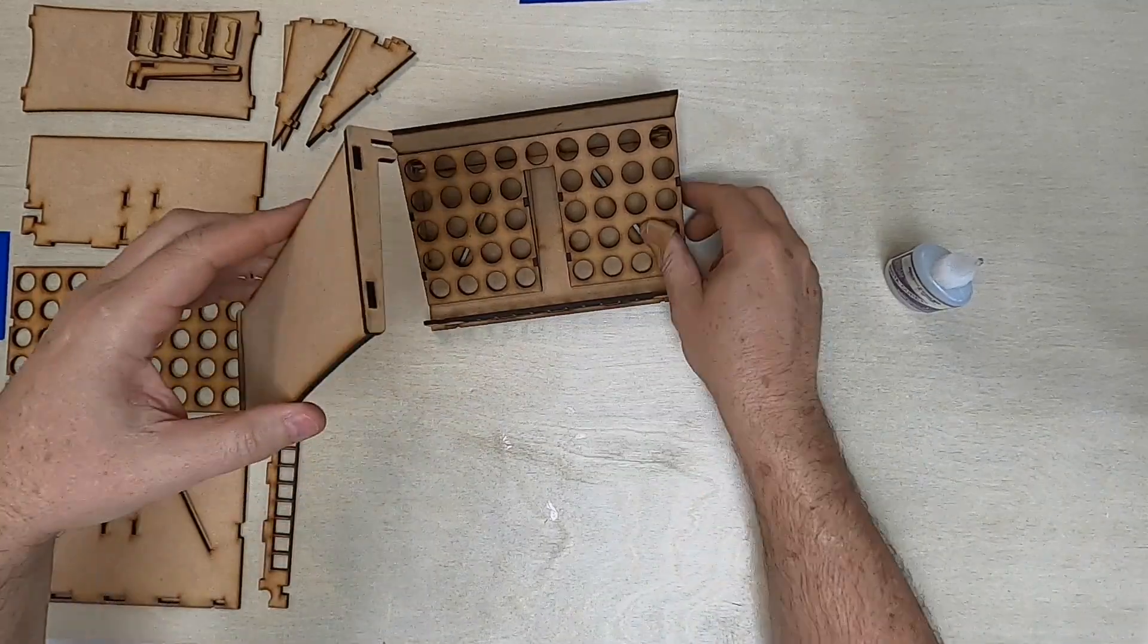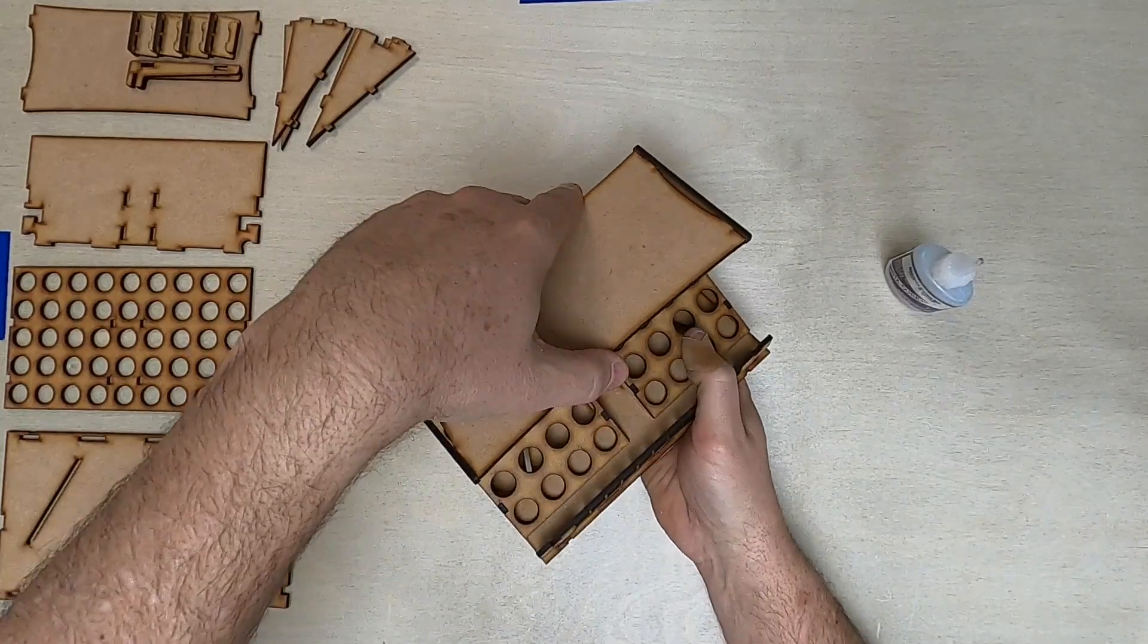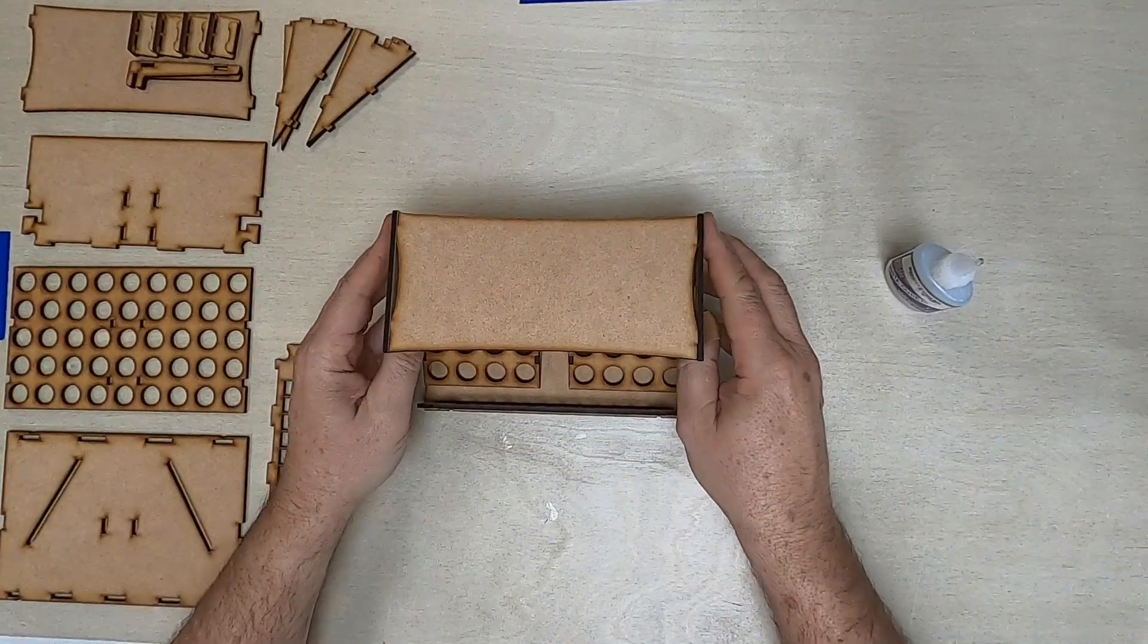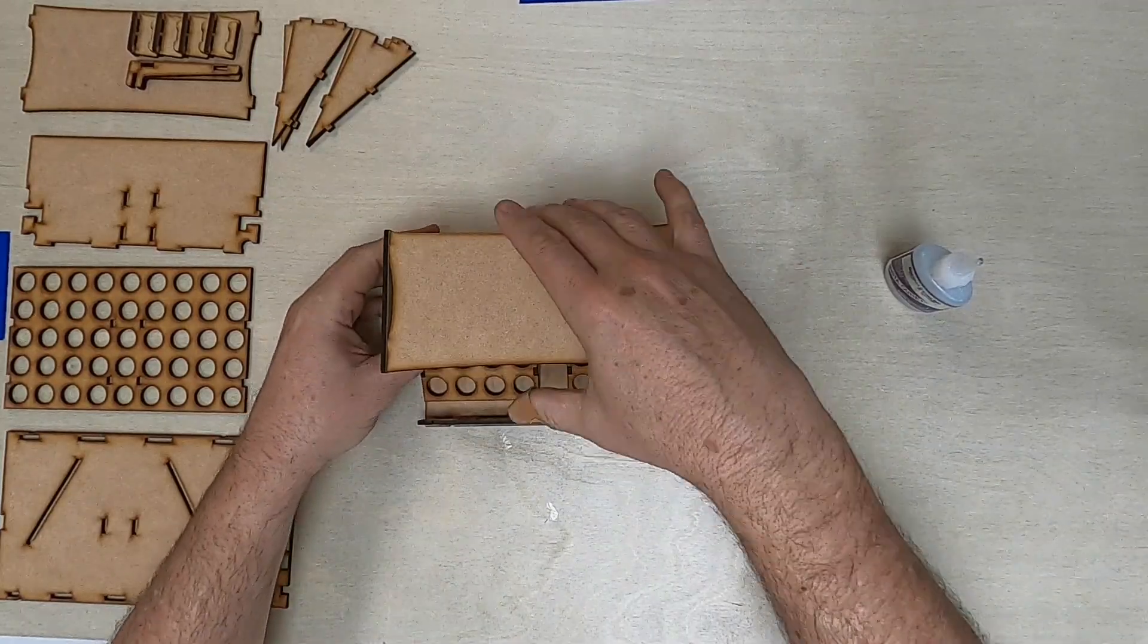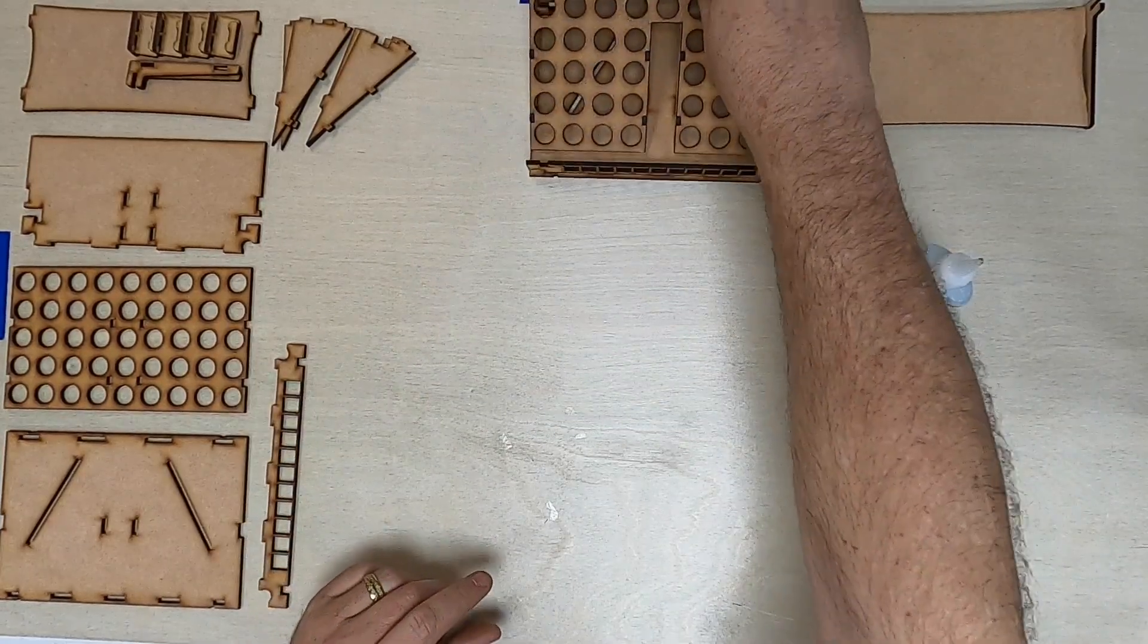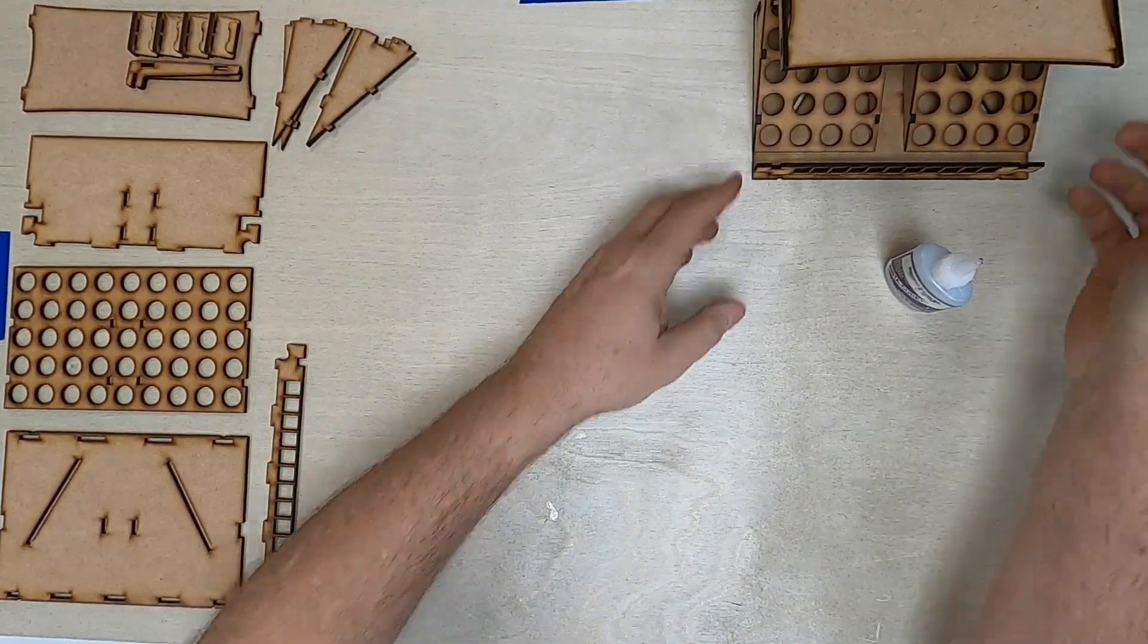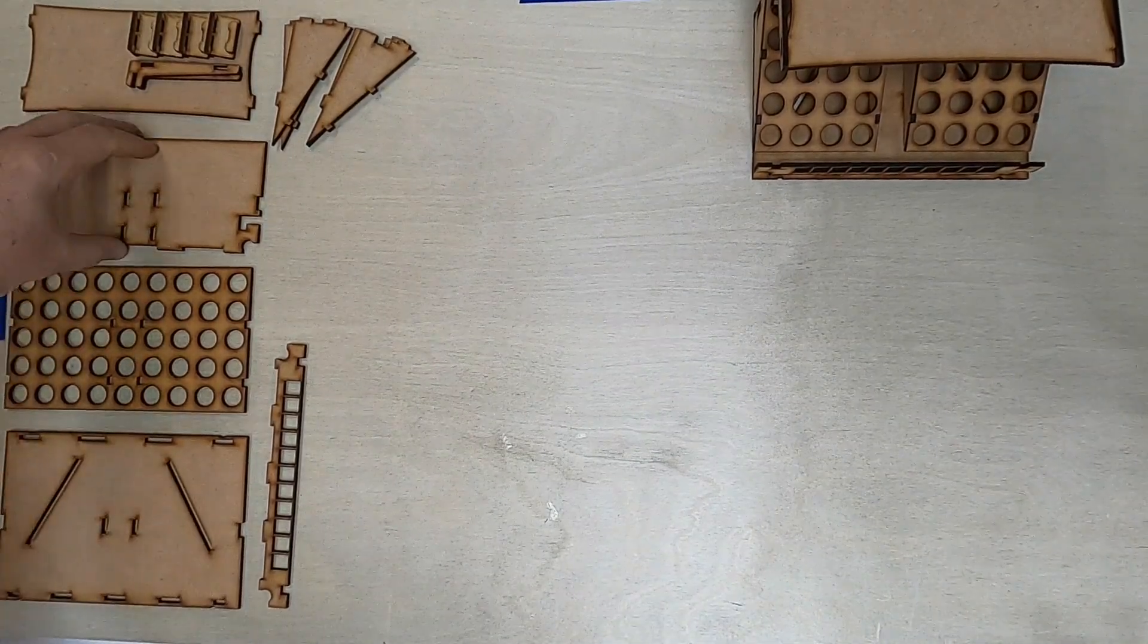And then the way that this will work is you simply slide it on both sides. So it's slid on that side. Slid on this side. And there you go. You have a canopy. Or you can take it off. And let's just set this stuff aside. We'll move it to the side here. And let's build the next one.